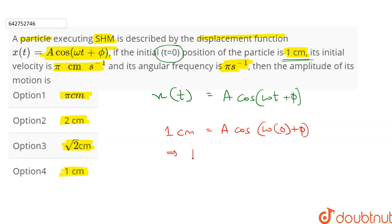This implies 1 cm = A cos φ. Let this be equation 1.